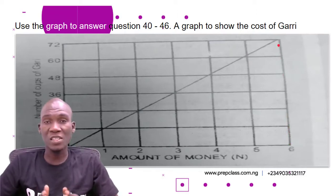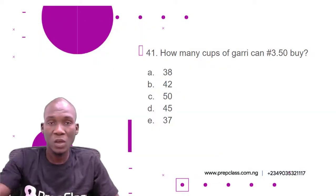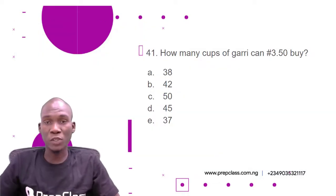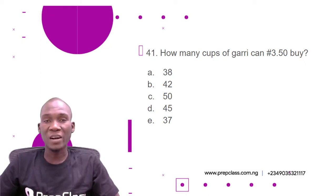So it is this information we are going to use to answer the next couple of questions. Question 41: How many cups of Garri can three Naira 50 kobo buy? A: 38, B: 42, C: 50, D: 45, E: 37.